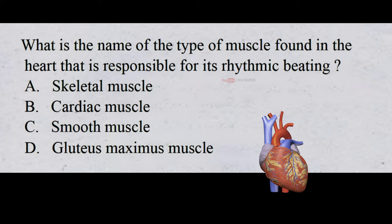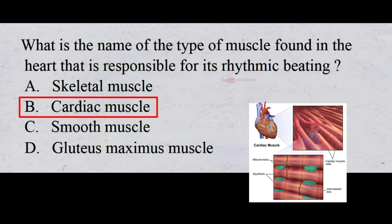What is the name of the type of muscle found in the heart that is responsible for its rhythmic beating? A. Skeletal muscle. B. Cardiac muscle. C. Smooth muscle. D. Gluteus maximus muscle. And the correct answer is B. Cardiac muscle. Cardiac muscle present in the heart is responsible for its rhythmic beating.